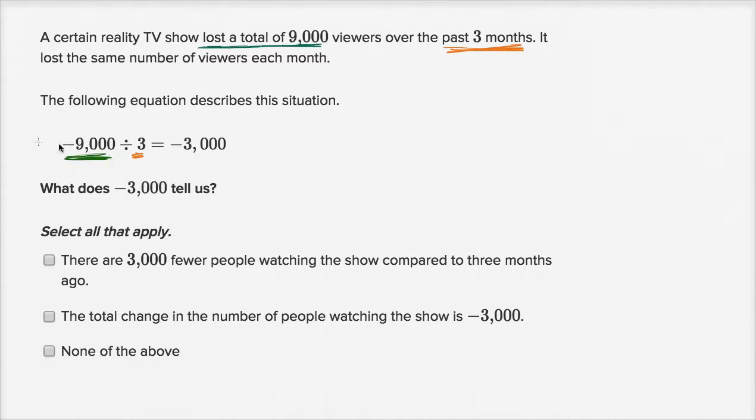So what they're figuring out here is what was the change in viewership per month? The negative 3,000 tells us that they lost on average, and actually it tells us they lost the same number, so they actually lost 3,000 viewers every month.